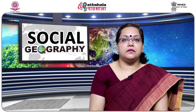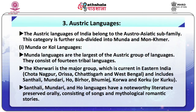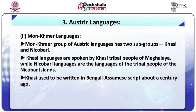The third family is the Austrik family, which belongs to the Austro-Asiatic sub-family of the world. This family can be divided into two branches: Munda or Khol languages, and Mon-Khmer languages. The Munda branch is a prime branch among the Austrik family consisting of 14 tribal languages. The Kherwari sub-branch in the eastern part of the country, especially in Chotanagpur, Orissa, Chhattisgarh, and West Bengal, is the major sub-branch. It further includes Bhumij, Korwa, Santhali, Ho, and Kurku. Languages like Santhali, Mundari, and Ho have preserved their literature through mythological and romantic stories as well as songs. In the Mon-Khmer language branch, we have two further sub-branches: Nicobari and Khasi. The Nicobari language is spoken by the people residing in the Nicobar Islands, while Khasi is a tribal language spoken by the people of Meghalaya.